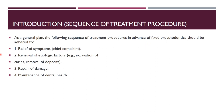Coming to the introduction. There is a sequence of treatment procedures. The sequence before starting an FPD treatment, as a general plan, follows these rules: first we relieve the symptom — that is the chief complaint — then we remove the etiological factor, for example excavation of caries and removal of deposits. Then we repair the damage, maintain dental health, and then we'll be replacing or doing fixed prosthodontics.